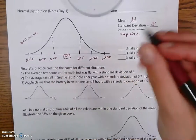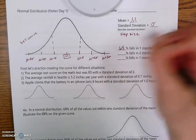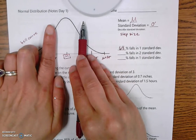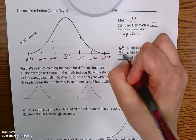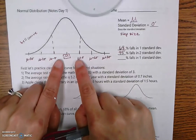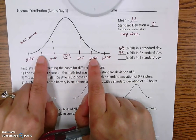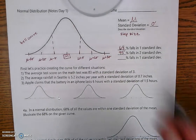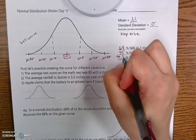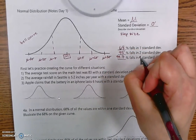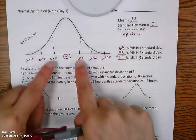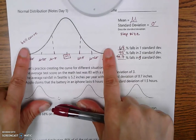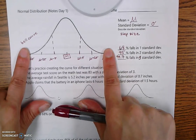68% of your data will fall within one standard deviation — one step up and one step down. 95% of your data will fall within two standard deviations — two steps up and two steps down. Lastly, 99.7% of your data falls within three standard deviations — three up and three down. Basically, 99.7% of the data falls in between those two outer boundaries.